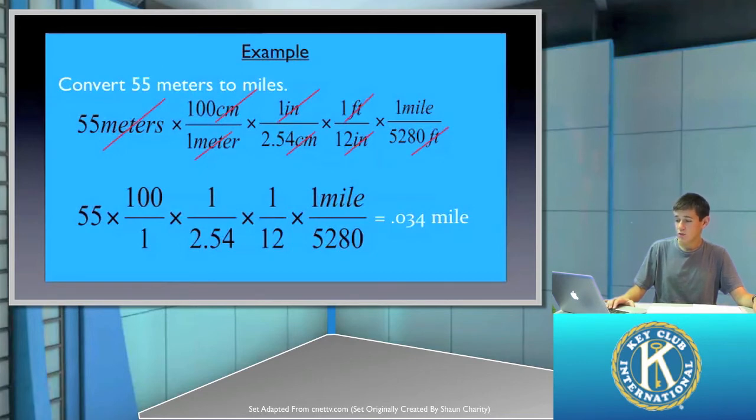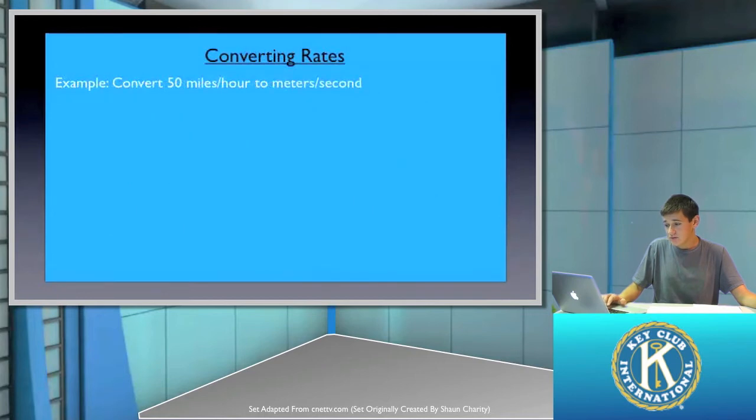Now, another situation where you'll have to use the factor label method to convert is not only with just normal single units such as meters or even units of time, but also with rates such as miles per hour, kilometers per second, and so on. So we're going to go into that right now. It's not too difficult. It's basically based on the same principle as what we have done before.